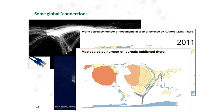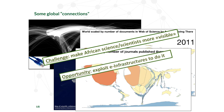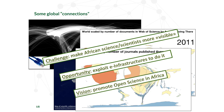These two maps are even more striking. One is the map of the world rescaled by the number of documents in Web of Science published by authors living in the country — you can see how large the northern hemisphere is, and how small Africa is. The other map is scaled by the number of journals published. So there is a challenge: make African science and scientists more visible, and there is an opportunity to exploit e-infrastructures to do that.